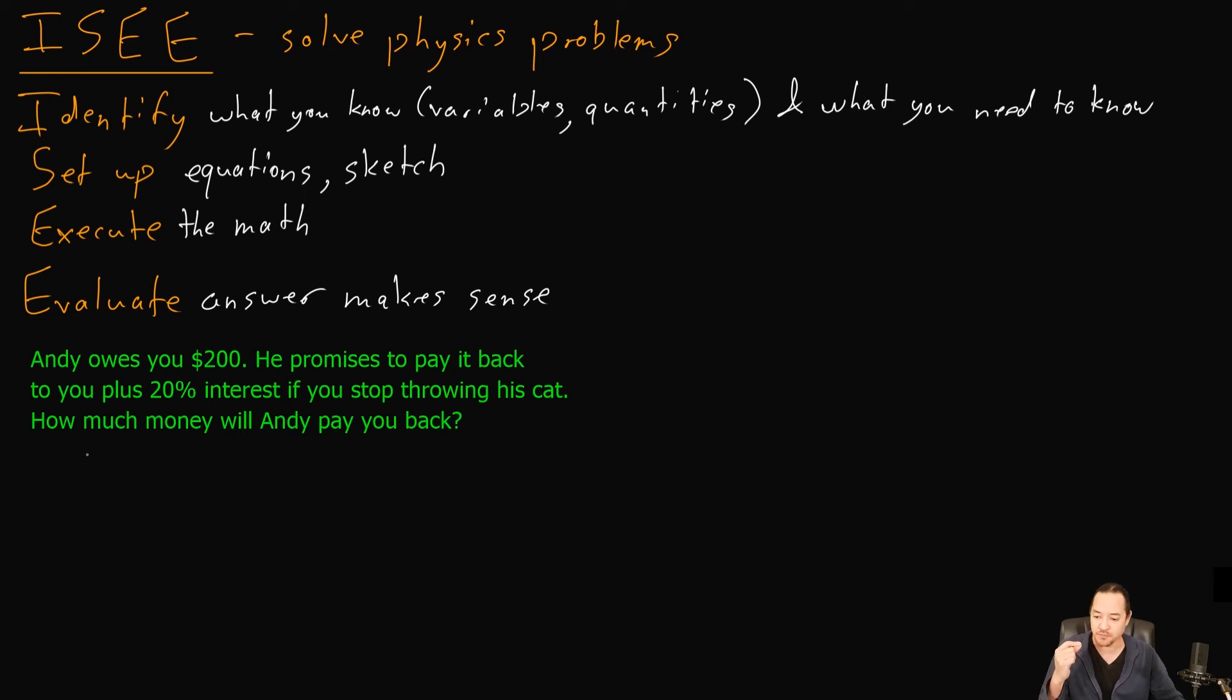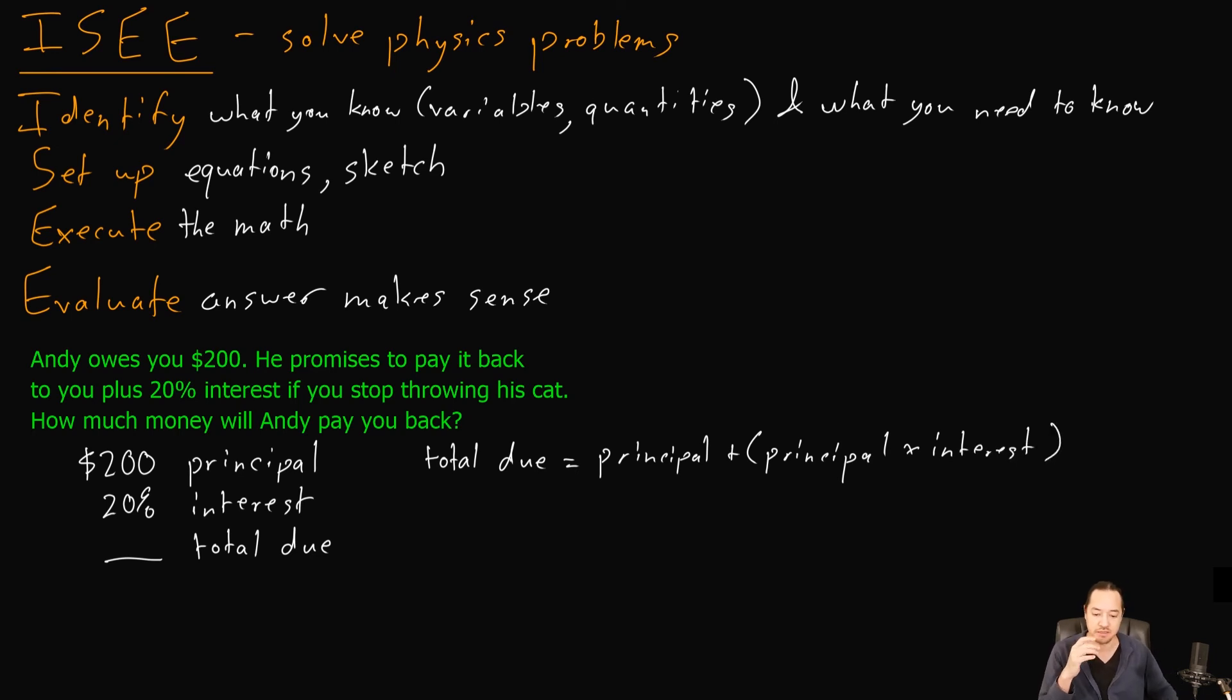Okay, let's go through the steps, ISEE. Identify. What do we know? What do we need to know? Well, we know that he owes you a total of $200, and that is what we're going to call the principle that you lent to him. And he's going to pay you 20% interest. And what do we need to know? Well, we need to know what is the total amount of money due to you. That's our goal. Okay, so we've identified the stuff. Now let's set up our equation. The equation here is not going to be too bad. Maybe we can say something like the total amount of money due is equal to the principle plus the principle multiplied by the interest rate. I think that makes sense.